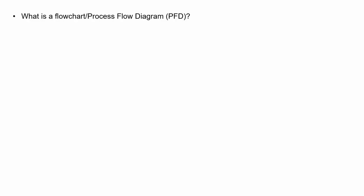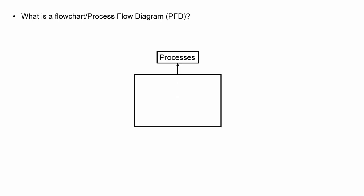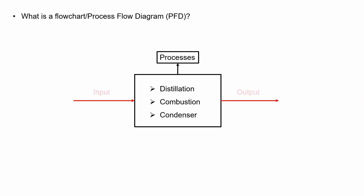So what is a flowchart or process flow diagram — PFD for short? In chemical engineering textbooks, we represent all processes using a box. It can be any process — for example, distillation, combustion, or a condenser — and we use straight lines to represent input and output streams.